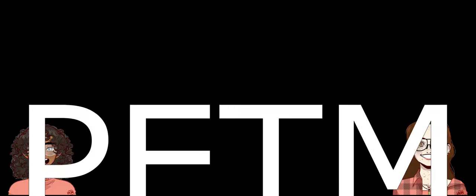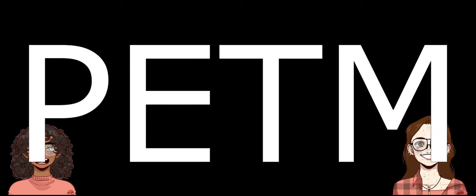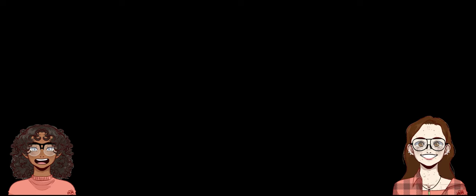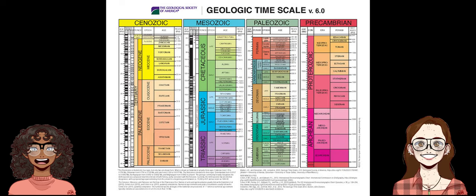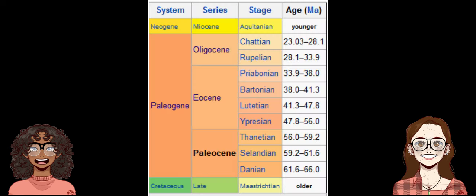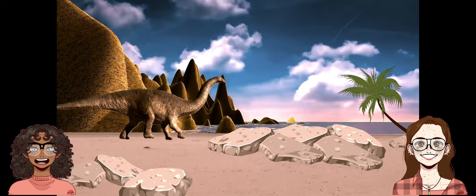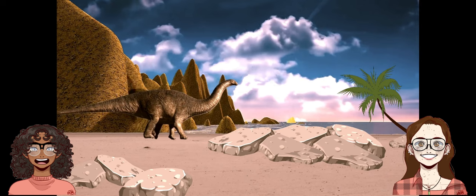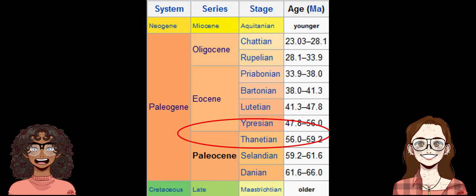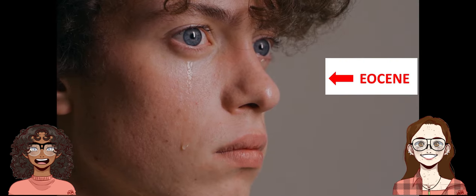The Paleocene-Eocene Thermal Maximum. Let's start with a little background — I'm a geoscience student who loves to study the PETM. The PETM occurred about 56 million years ago during the Paleogene period of the Cenozoic Era. The Paleocene and Eocene are two epochs as smaller time units during this era. During the Paleocene, the Earth was recovering from the KT extinction — the one that killed the dinosaurs. The PETM occurred in the transition between the two, and the Eocene would be spent recovering from the drastic effects.